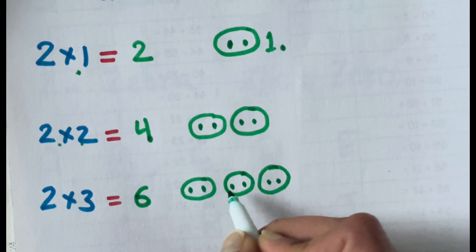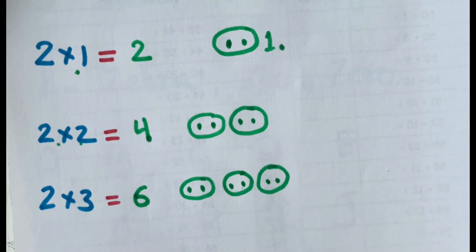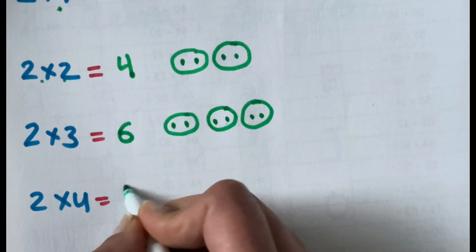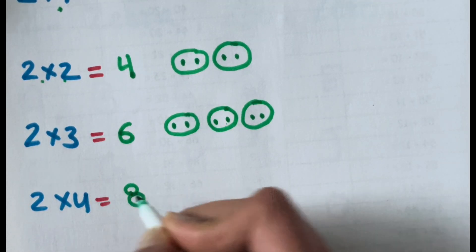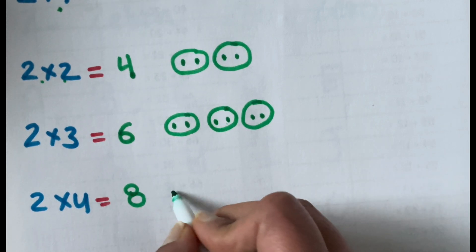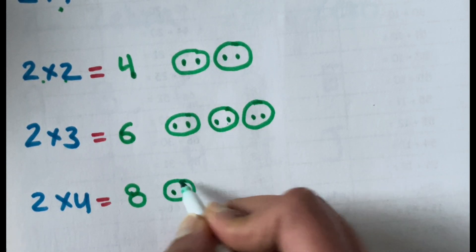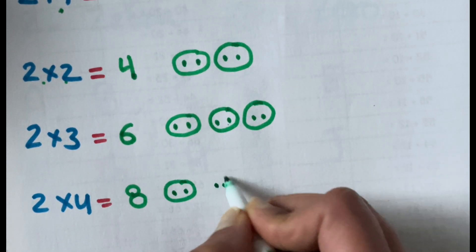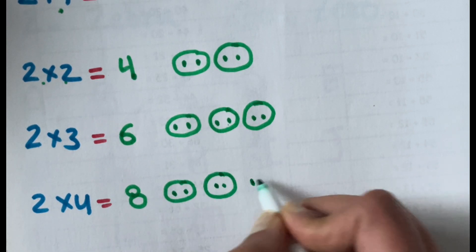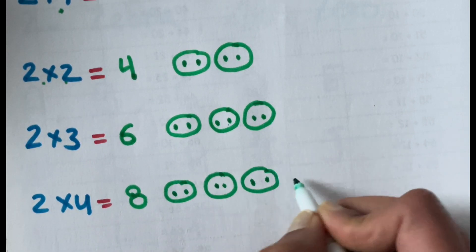1, 2, 3, 4, 5 and 6. 2 times 4 is 8. That means 4 groups of 2. 1, 2 groups. 3 groups.